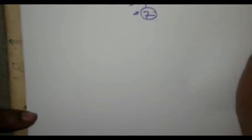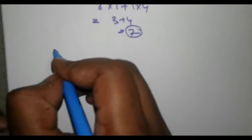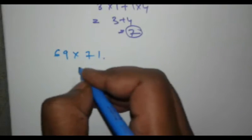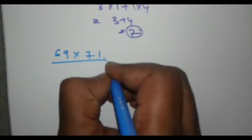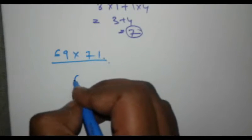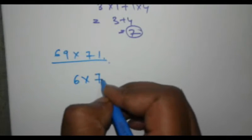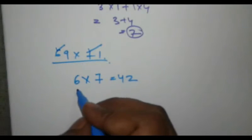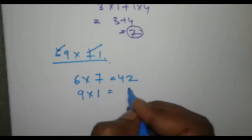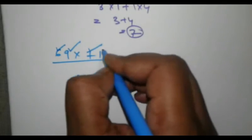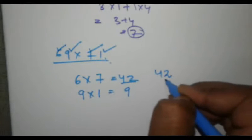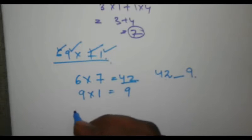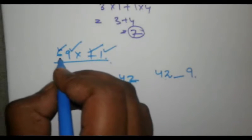We multiply 6 into 7 and we get 42. Next, 9 into 1 is 9. So we have 42, space, 9.